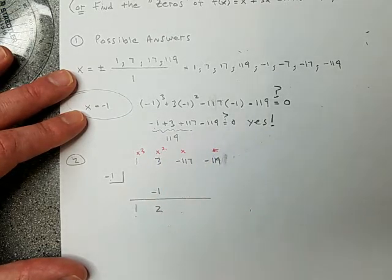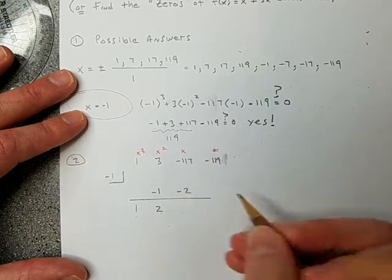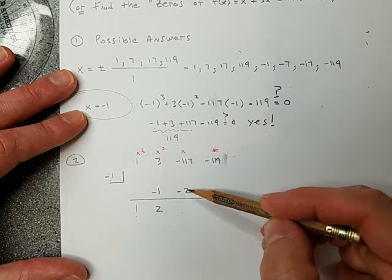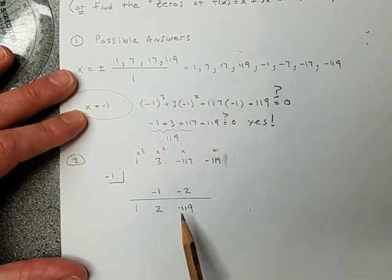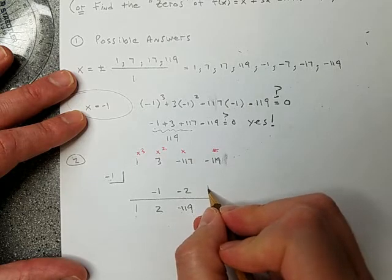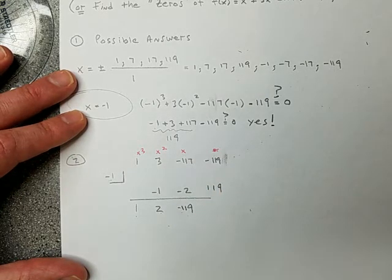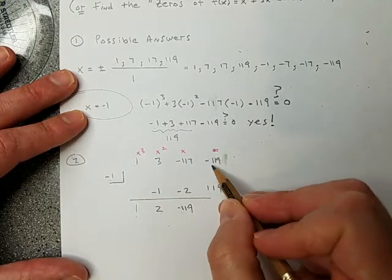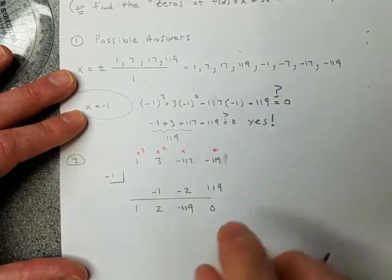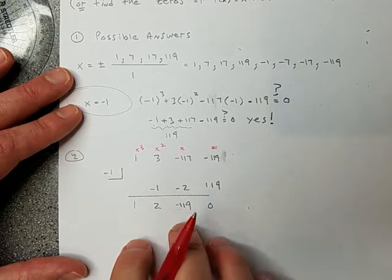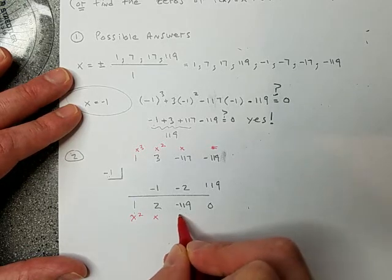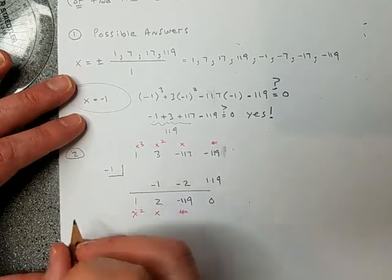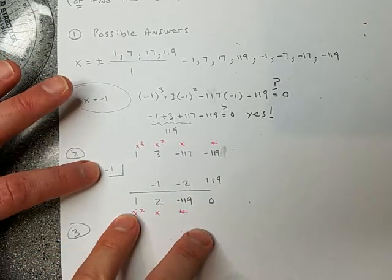Now that synthetic division is set up, we bring down the first number, multiply it by negative 1, then add column by column. 3 plus negative 1 is 2. Multiply negative 1 times 2 to get negative 2. Then negative 117 plus negative 2 is negative 119. Multiply negative 1 times negative 119 to get positive 119. Finally, negative 119 plus 119 equals zero — which is what we'd expect.